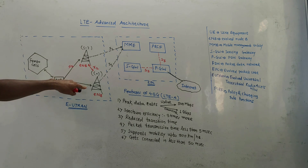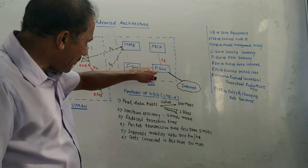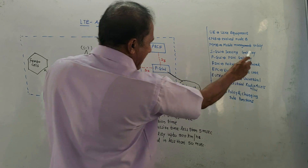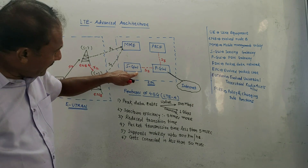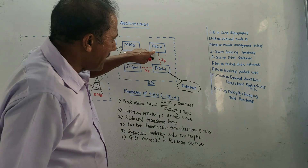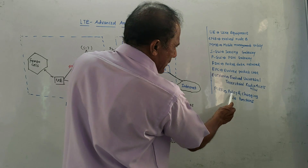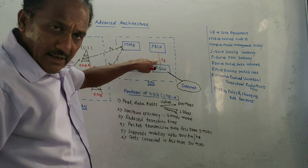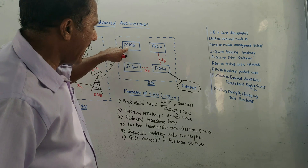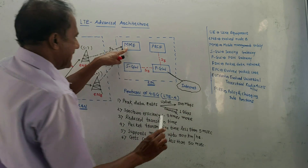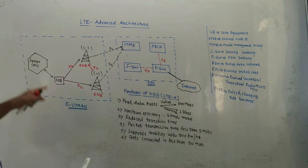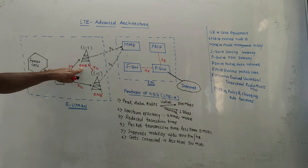The X2 interface is used between UE and eNB. SGW is the serving gateway and PGW is the PDN gateway — the interface used between them is S5. Between PGW and PCRF, the interface is S7. PCRF stands for policy and charging rule functions. MME is the mobile management entity.